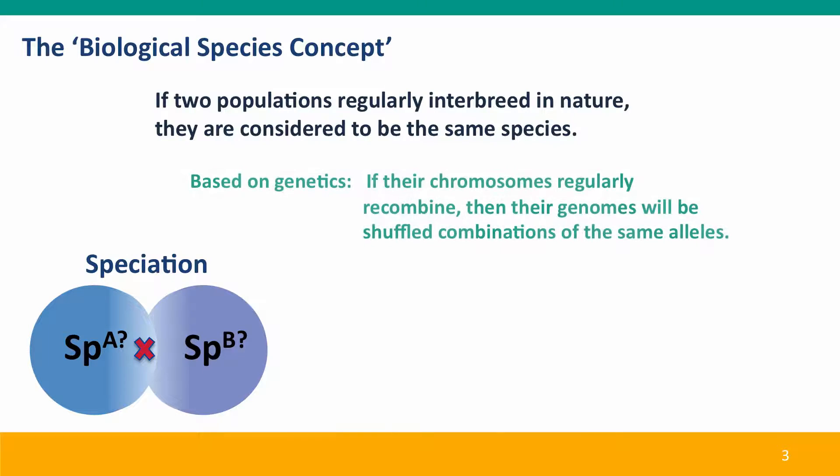It's a definition that makes sense genetically because if populations interbreed successfully, then this means that their chromosomes are regularly recombining and that their genomes are going to become shuffled combinations of the same alleles. And of course, if that's the case, they're sharing the same alleles, then they really have to be the same kind of organism, the same species.